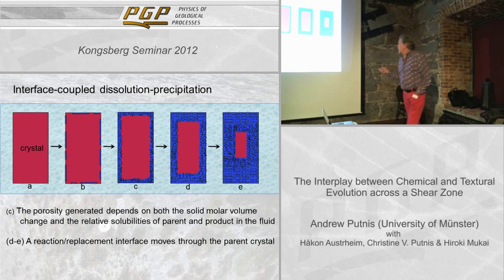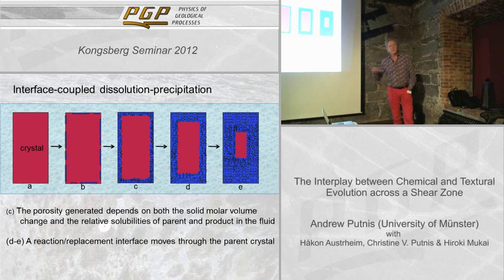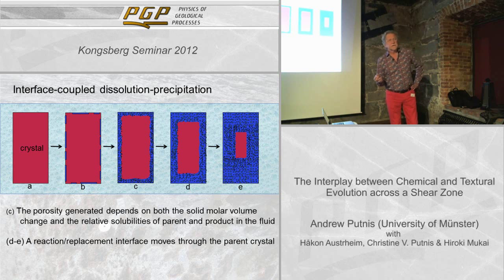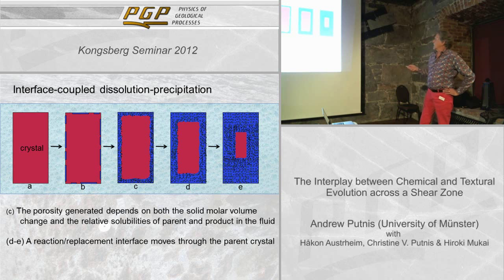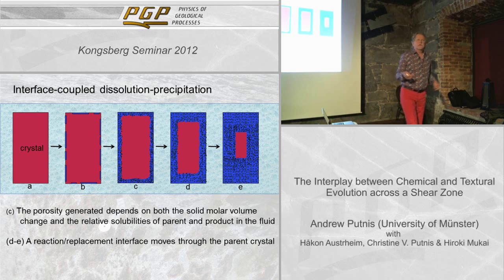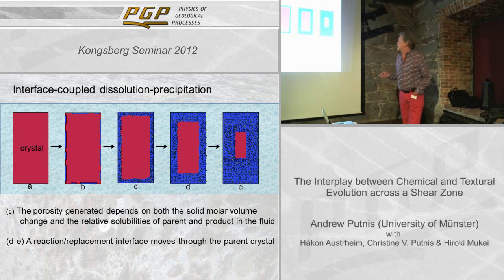Most people in metamorphic petrology think: how can you generate porosity in a rock where perhaps you even have a molar volume increase? The molar volume of the solid is not the critical thing — it's the relative solubility of the parent and the product in the particular fluid. So you can replace one apatite by another apatite very easily, even replace impure gold by gold. It doesn't matter that the absolute solubility is low because you never have much stuff in solution — it's only at the interface that you have the material in solution. This porosity generation is a very important part of this whole story.